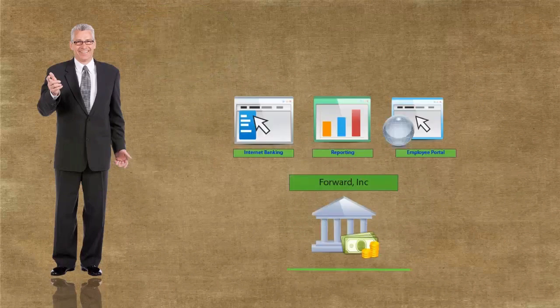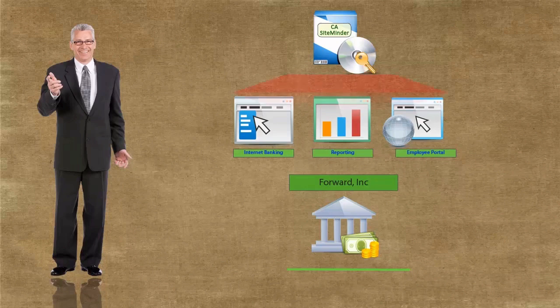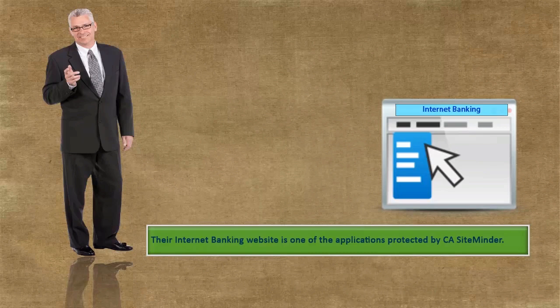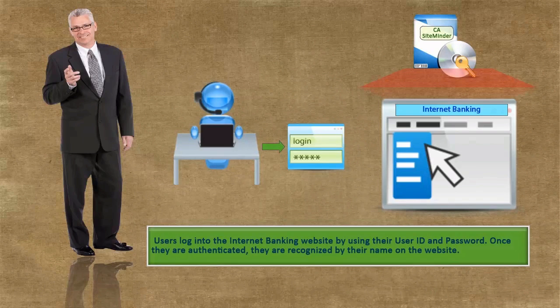Forward Incorporated is a banking organization that uses CA SiteMinder to protect their IT applications. Their internet banking website is one of the applications protected by CA SiteMinder. Users log into the internet banking website by using their user ID and password. Once they are authenticated,